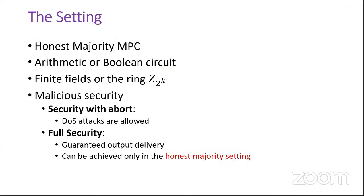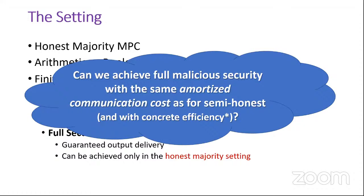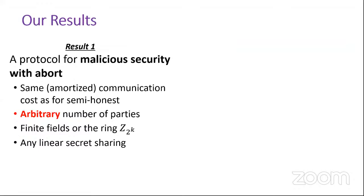This talk is about honest majority MPC with computation of arithmetic or Boolean circuits over fields or rings Z_{2^k}. We consider malicious security with two guarantees: security with abort, where the adversary can prevent parties from receiving the output, and full security where output delivery is guaranteed. The main motivation was: can we achieve full malicious security with the same amortized communication cost as for semi-honest, without sacrificing concrete efficiency — using only cheap symmetric crypto such as black-box use of any PRG?